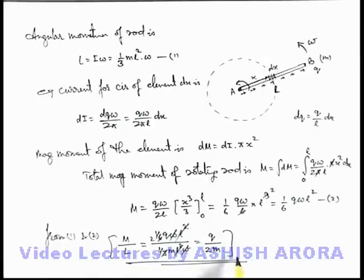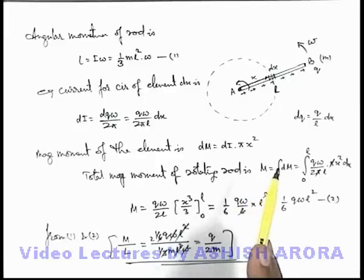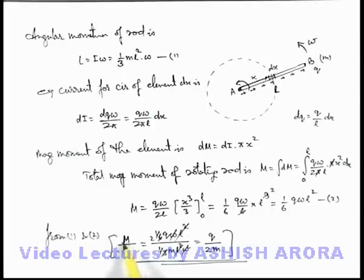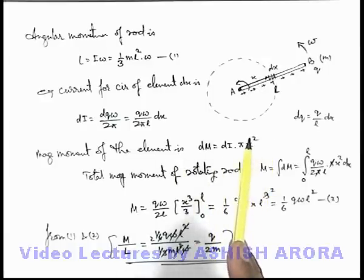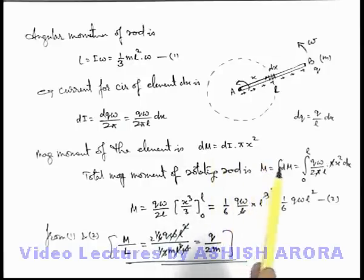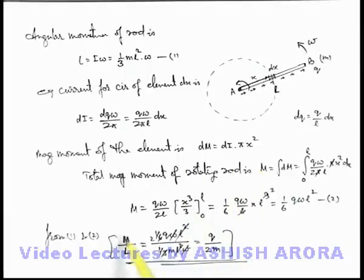All students should keep in mind that for uniformly charged rotating bodies, the ratio of their magnetic moment to angular momentum will always be q/2m. Always remember: this is valid for uniformly dense, symmetric, and uniformly charged bodies. It is not the case that for a randomly shaped object, if you charge it in any way and rotate it, the ratio will always remain constant — that will not always happen.